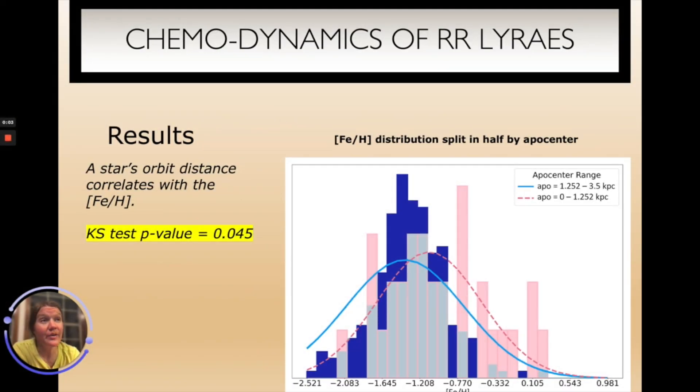If we split the RR Lyrae stars by apocenter distance, however, we do see there is a difference in FeH metallicity. This histogram shows the metallicities of the RR Lyrae stars that have apocenter distances between 0 and 1.25 kiloparsecs in pink and the blue histogram shows the RR Lyrae stars that have apocenter distances between 1.25 kiloparsecs and 3.5 kiloparsecs. Those RR Lyrae stars that are on the most centrally confined orbits have, on average, higher metallicities than those that are not on as centrally tight orbits.